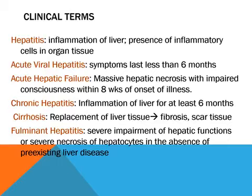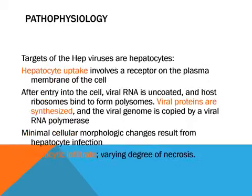Acute viral hepatitis occurs when symptoms are less than six months. In cases of massive hepatic necrosis, when the patient has an altered level of mentation within eight weeks of onset of illness, we call it acute hepatic failure. Chronic hepatitis is inflammation of the liver lasting at least six months. Cirrhosis is a replacement of classical liver architecture with fibrosis, scar tissue, and regenerative nodules. Fulminant hepatitis is severe impairment of hepatic function or severe necrosis of hepatocytes in the absence of pre-existing liver disease.